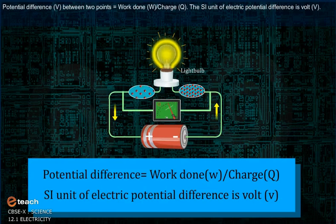Potential difference V between two points is equal to work done W upon charge Q. The SI unit of electric potential difference is volt V.